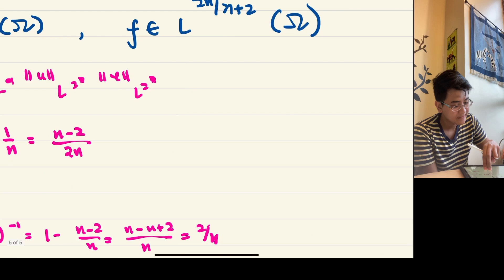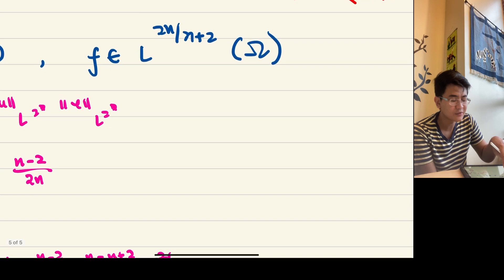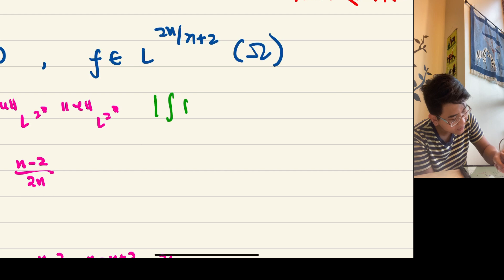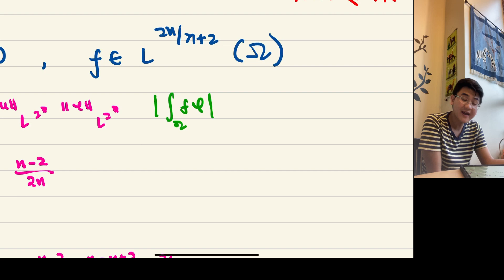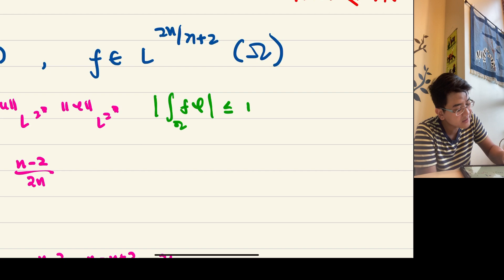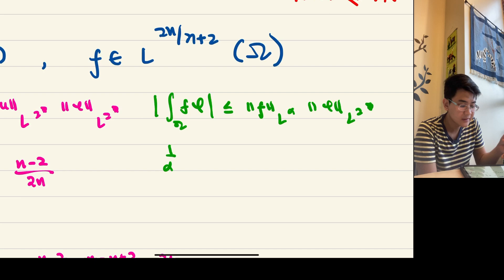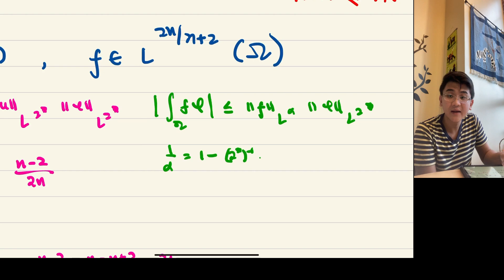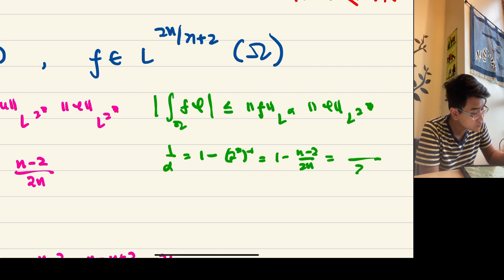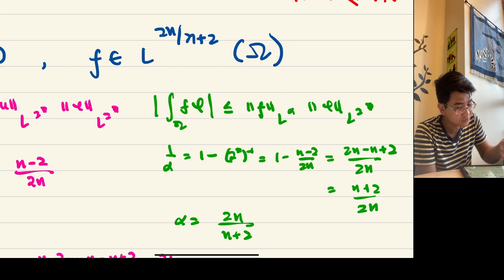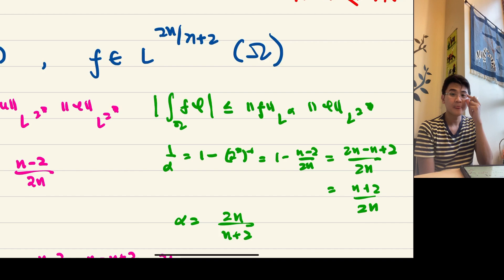Similarly for F, which appears in the integral of F phi. Applying Hölder's inequality and solving for alpha the same way: one over alpha equals one minus the Sobolev inverse, giving 1 − (n−2)/(2n) = (n+2)/(2n), so alpha = 2n/(n+2). That is the minimum integrability assumption for F to ensure the integral makes sense for every test function — hence F in L^{2n/(n+2)}.